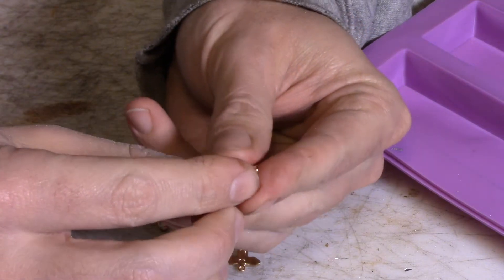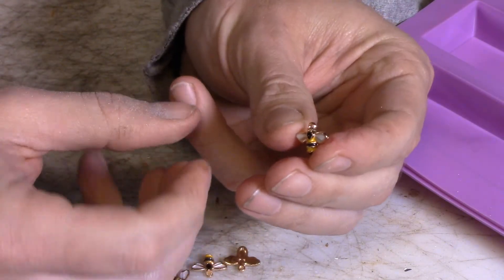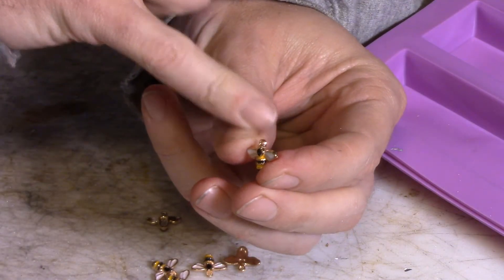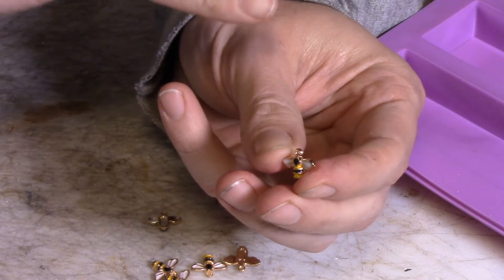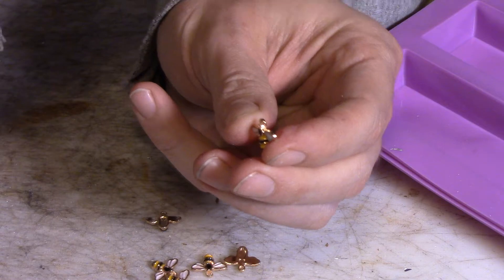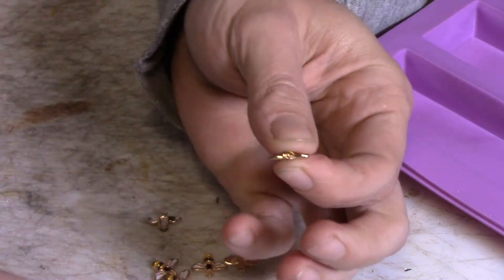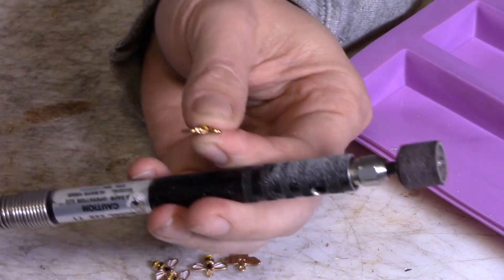The little bees that I found on Amazon have a little loop on them because they're for a charm bracelet, and I'm going to take that little loop off and it'll just look like some antennae. I'll do the same thing with the Dremel tool.